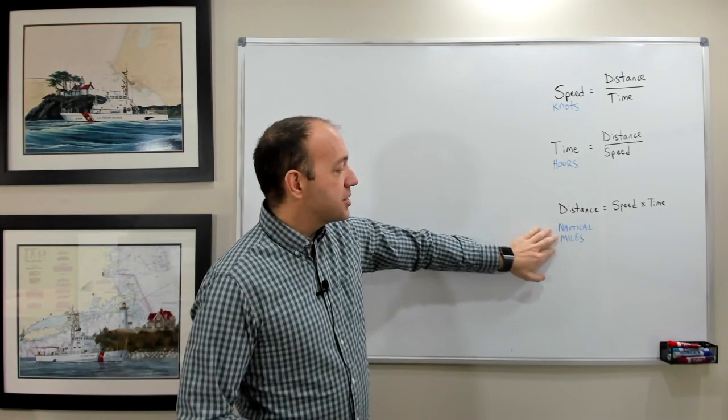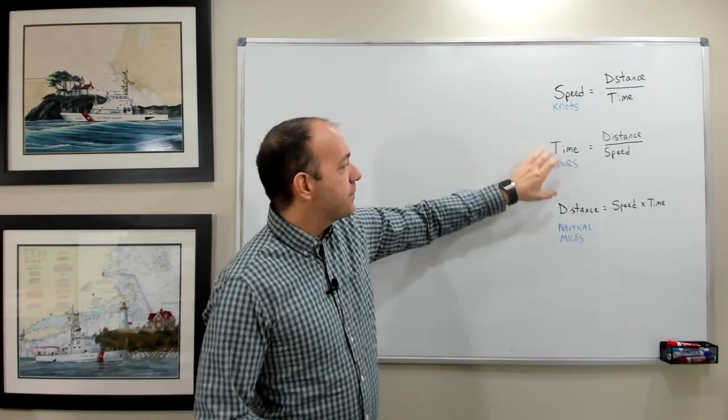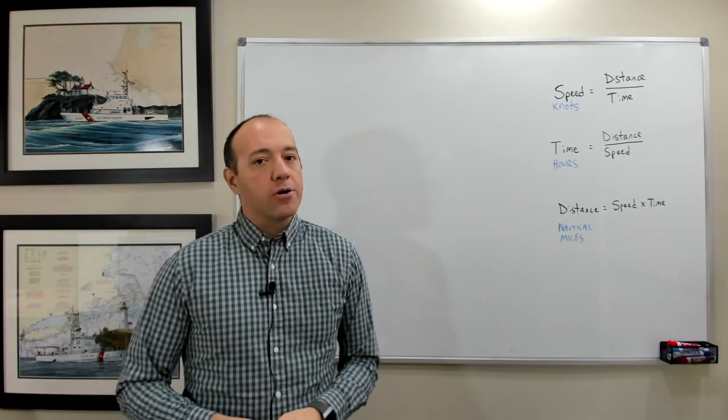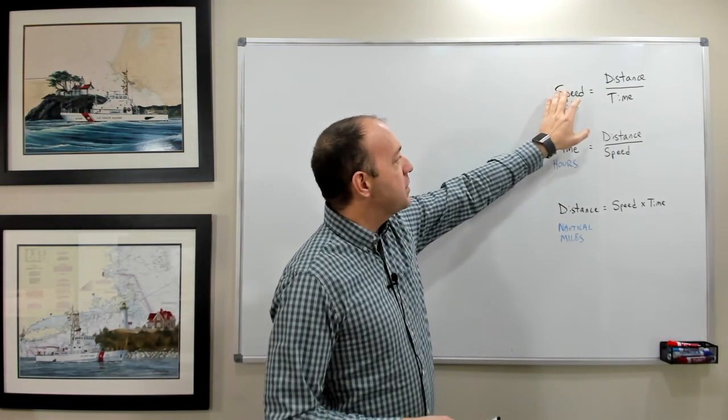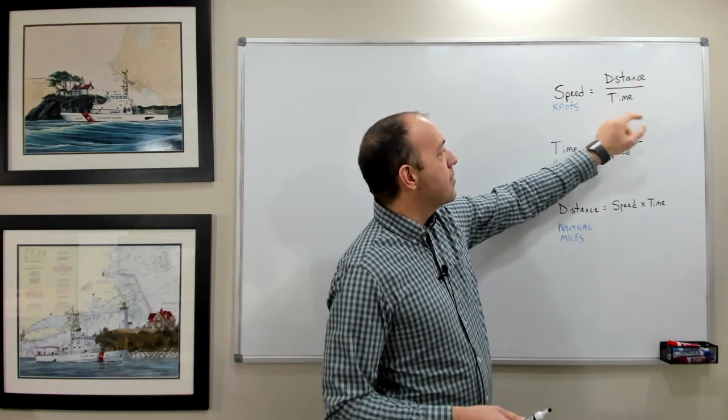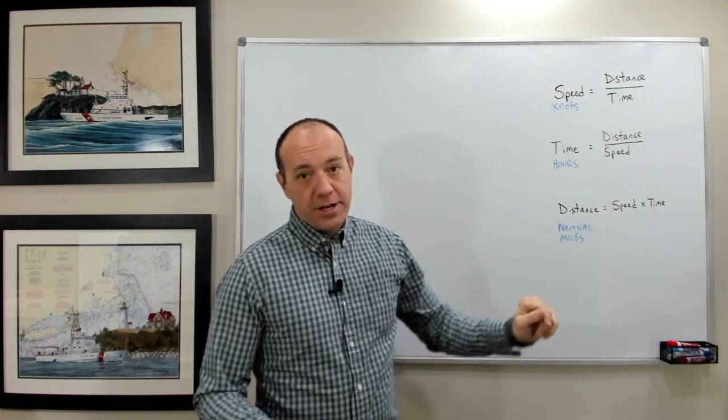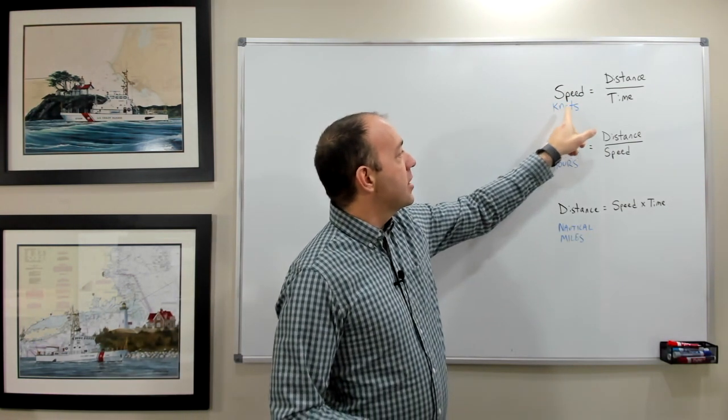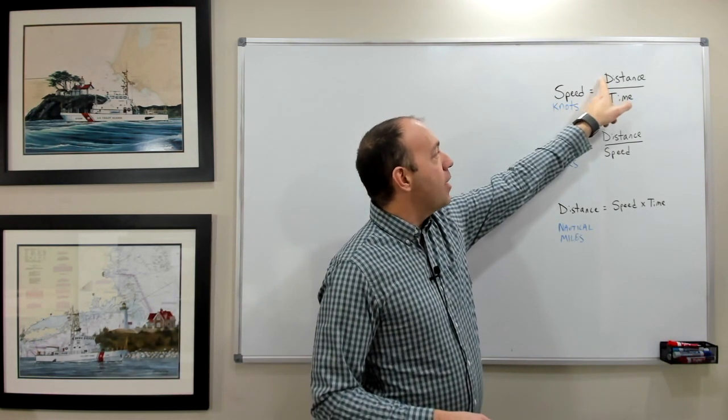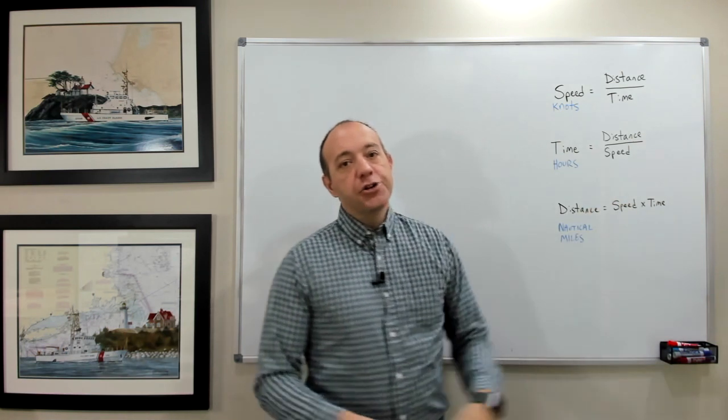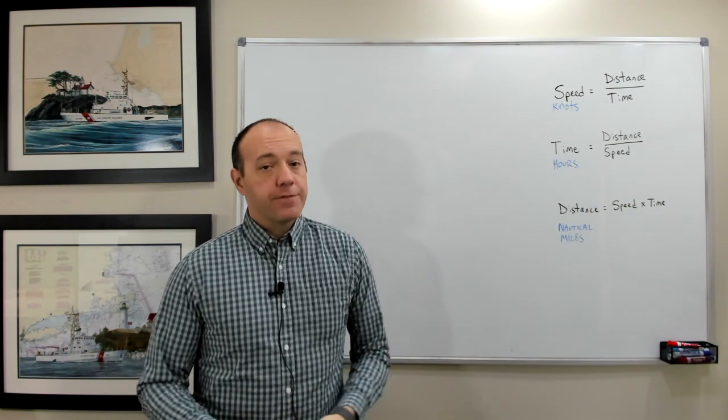For distance, it's always going to be in nautical miles. And for time, it's always going to be in hours. So if you really just remember speed is equal to distance over time, and you do some algebra, you can figure out the rest of the equations. And if you remember knots is nautical miles per hour, you can remember the unit of measure for all these things.